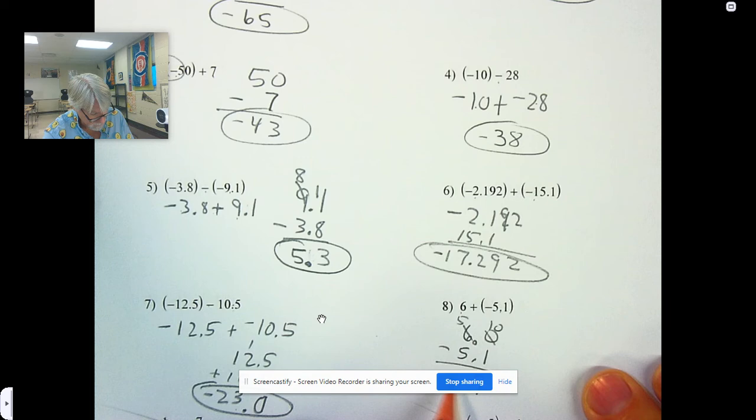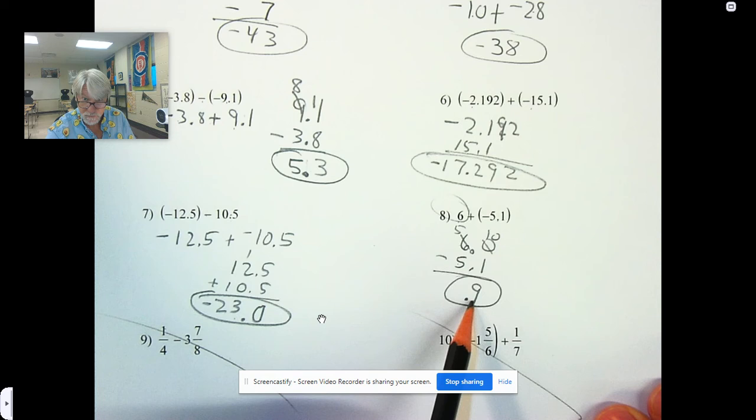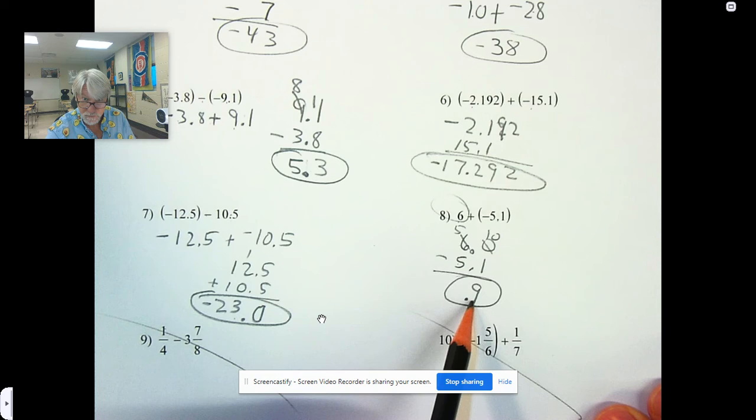The largest absolute value goes on top. Use the sign of the number with the larger absolute value. Sorry about that. The larger absolute value goes on top. Use the sign of the number with the larger absolute value.